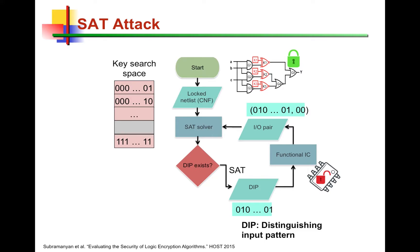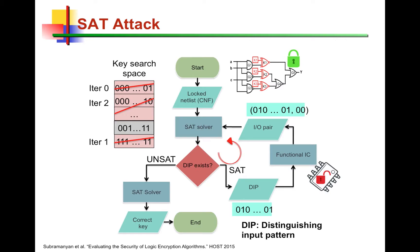The DIP and the oracle's response — the output values — are fed back into the CNF formula, embedded in the formula. In subsequent iterations of the SAT solver, this information is included and iteratively grows. In the next iteration, we look for another DIP, go to the oracle, and get the response. Gradually the CNF formula grows, and more and more key values are pruned away. Eventually, the SAT solver will indicate there is no more DIP, meaning all remaining key values are valid keys. Ideally, we are left with only the correct key.